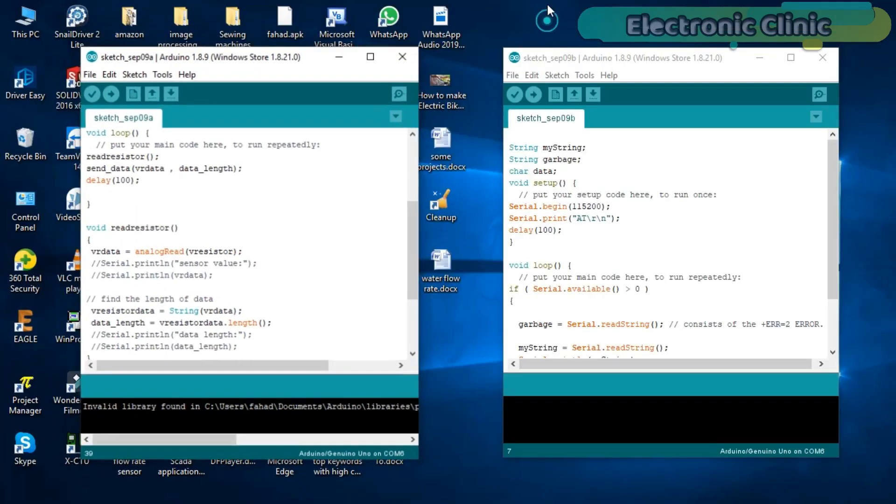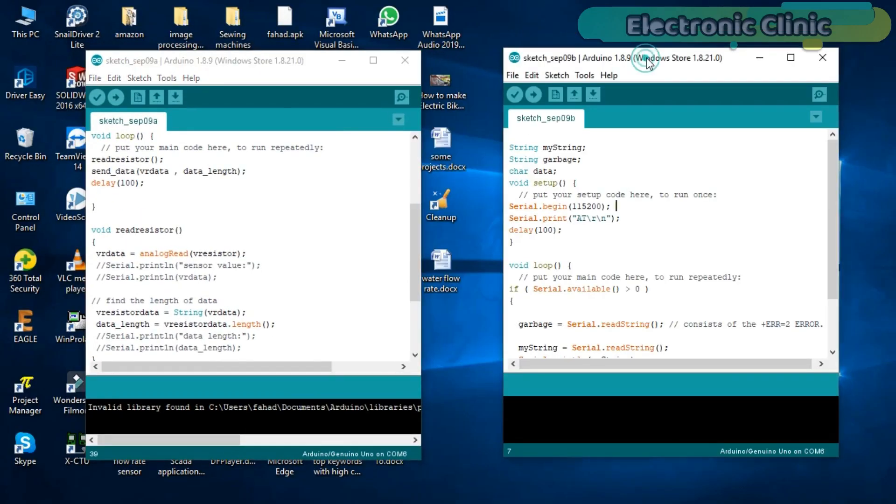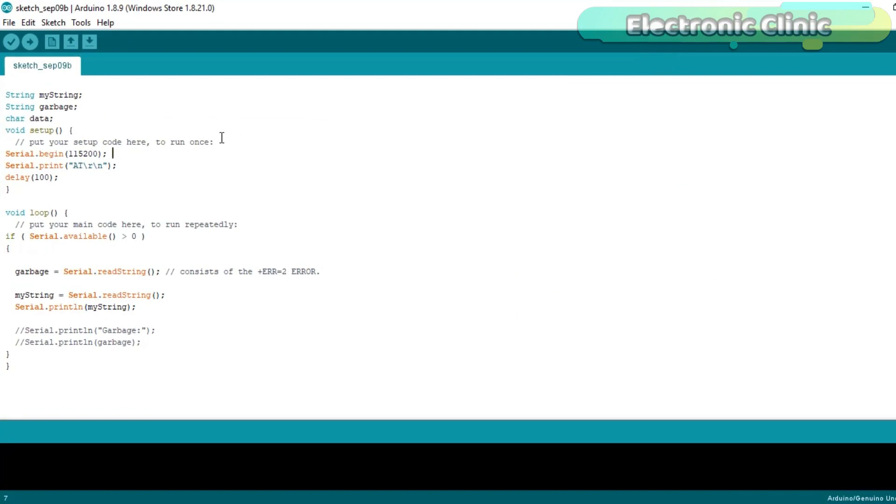So that's all about the transmitter programming and now let's discuss the receiver programming. I started off by defining the variables of the type string and character. In the void setup function I activated the serial communication and selected the same baud rate. If the Arduino has received data from the LoRa module then simply read the string and print the message on the serial monitor. So that's all about the programming.